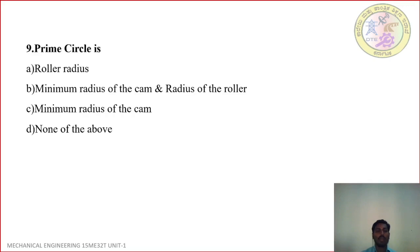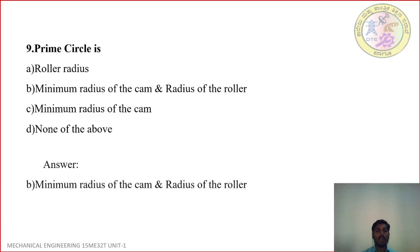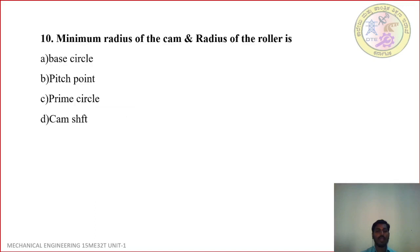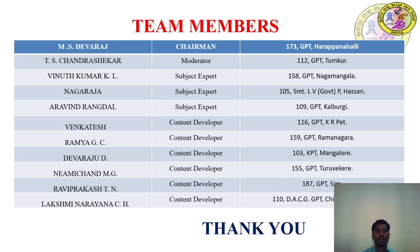Question 9: Prime circle is — A: Roller radius, B: Minimum radius of the CAM and radius of the roller, C: Minimum radius of the CAM, D: None of the above. Correct answer is B: Minimum radius of the CAM and radius of the roller. Question 10: Minimum radius of the CAM and radius of the roller is — A: Base circle, B: Pitch point, C: Prime circle, D: CAM sharp. Correct answer is C: Prime circle. Thank you.